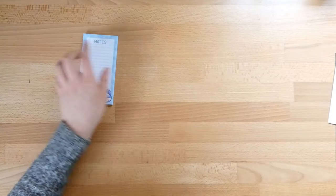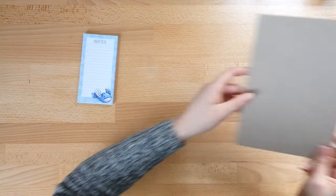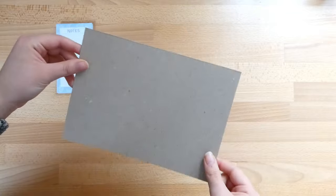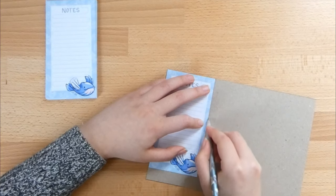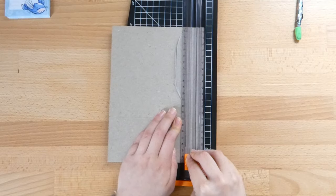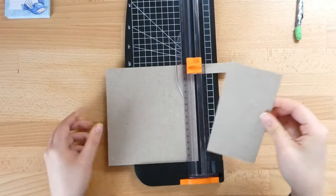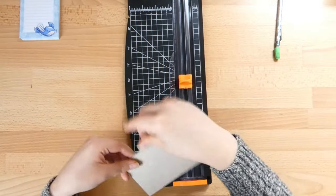Once you have all of your notepad pages cut out, you're going to want to grab your chipboard and cut out a piece that is the same size as your notepad pages. This will become the back of your notepad. And when you're done with that, you're ready for the final step!